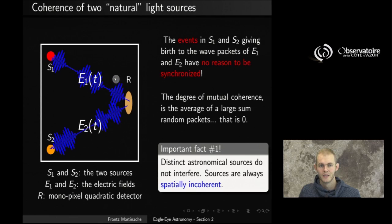So now if we think about the coherence of two natural light sources, and here we're going to slowly transition toward our application, which is actual astronomy. So we can think of two natural light sources as two different stars or two parts of the same star, the left part and the right one or the top and the bottom or the center of something else. But easiest to think about two distinct stars, S1 and S2. Now you realize that the events in S1 and S2 that give birth to the wave packets that make up the bulk of the electric fields E1 and E2,